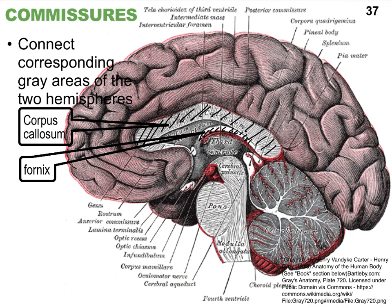There are two important commissures to know. The first is the corpus callosum — a big C-shaped piece of white matter that interconnects the left and right hemisphere. Just inferior to that C-shaped structure is a smaller C-shaped structure also called a commissure — the fornix. The fornix plays an important role in relaying information about smell.